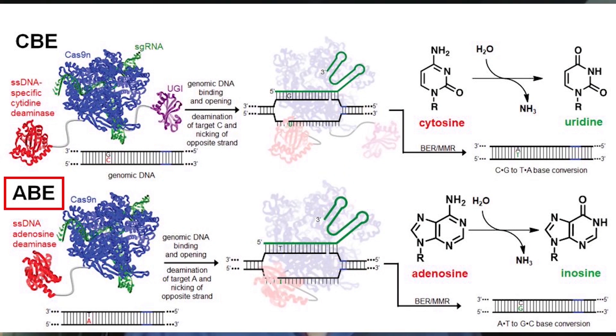The Alexis Komor-led cytosine base editor can only make two kinds of DNA changes — it can change Cs into Ts and Gs into As. Our first effort to broaden the applicability of precise genome editing without double-stranded breaks was to develop a different kind of base editor: an adenine base editor, which can change As into Gs and Ts into Cs. It does the opposite of what a cytosine base editor does.